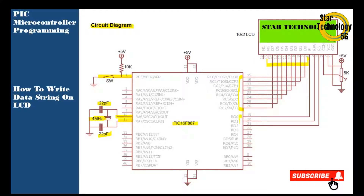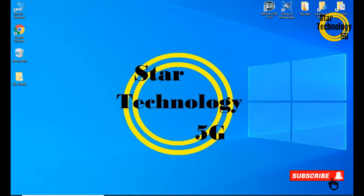We are using RD0, RD1, and RD2 pins interfaced with the Enable pin, Read/Write pin, and RS pin. Pin number 3 is the contrast control pin, pin number 2 is VCC, and pin number 1 is ground. Now let's draw the circuit in Proteus, and after that we will write the code in MPLAB.